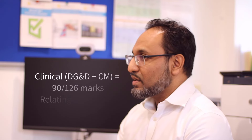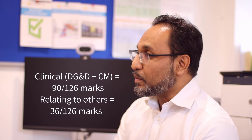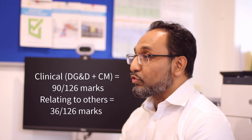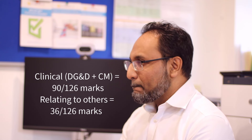Together, data gathering and diagnosis and clinical management and complexity, once you add the weighting, make up more than 70% of the marks. So more than 70% of the marks relate to clinical things, and less than 30% relate to your interpersonal skills, being person-centered, social and psychological aspects — the relating to others domain.